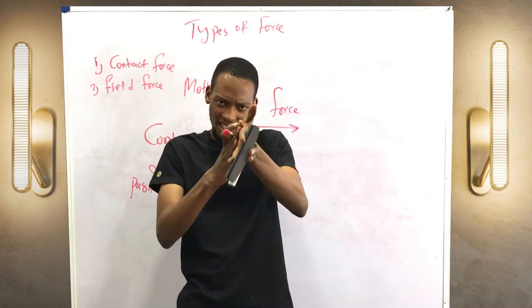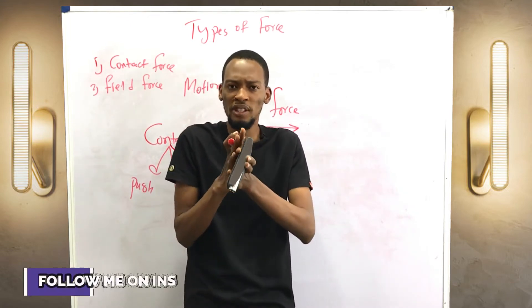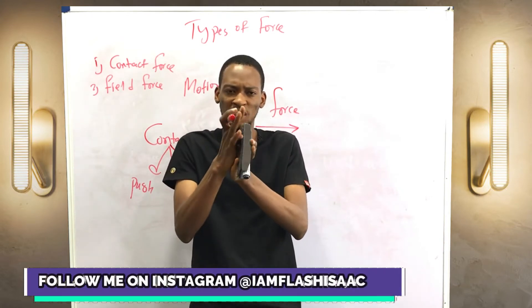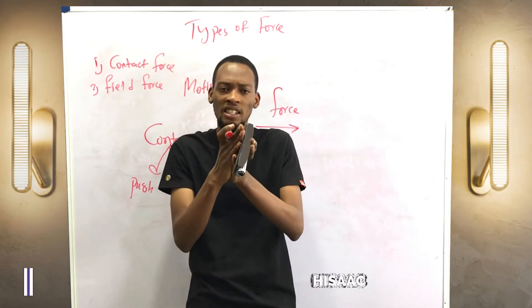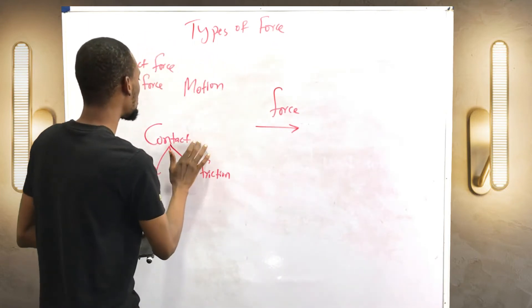If you are rubbing your palm against each other, there is motion. This one is trying to oppose motion with this one. So it results in wear and tear or heating. So that is a contact force. These are the three main contact forces.